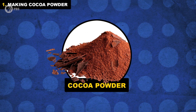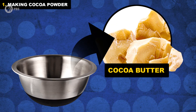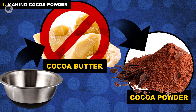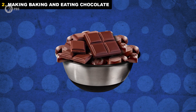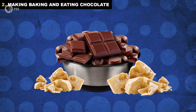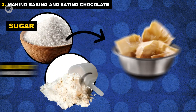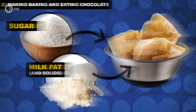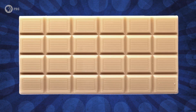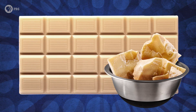To make cocoa powder, most of the cocoa butter is removed and the remaining cocoa solids are dried. To make baking and eating chocolate, some cocoa butter is left in the final product, and then sugar and milk fat and solids are thrown in. But to make white chocolate, it's all about the cocoa butter.